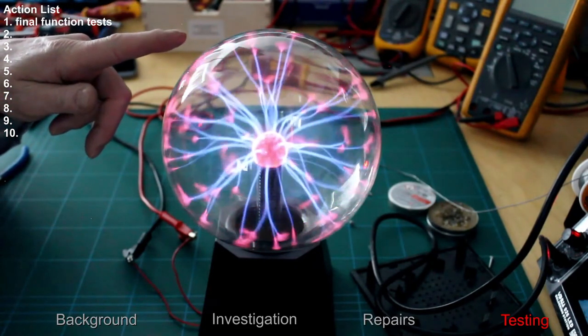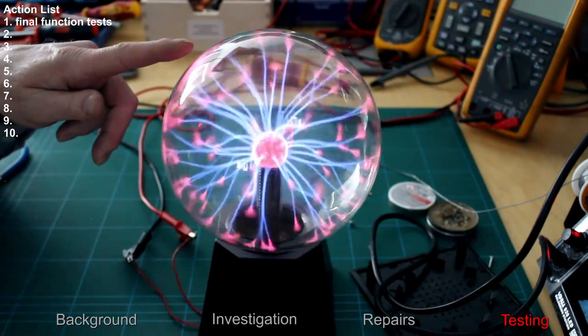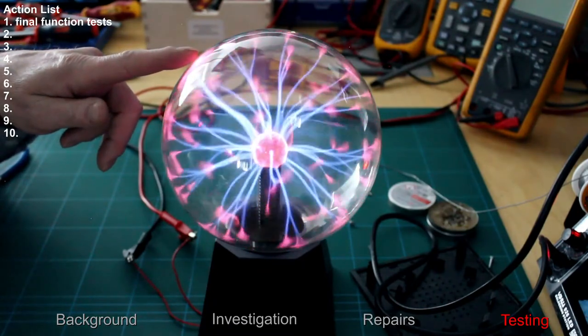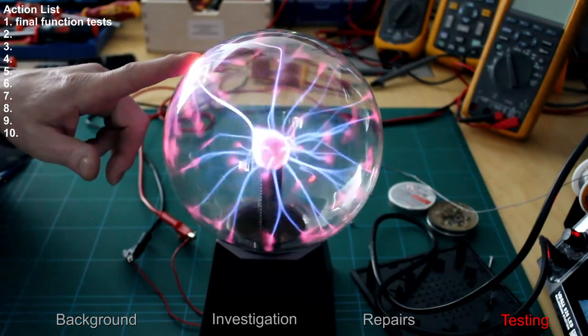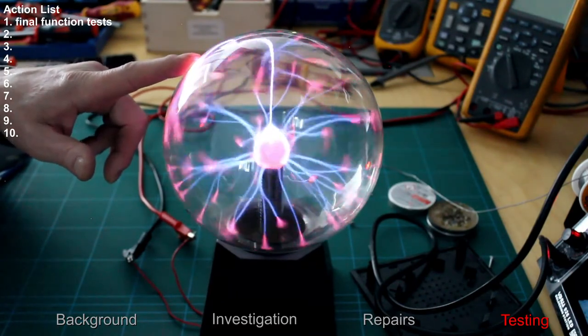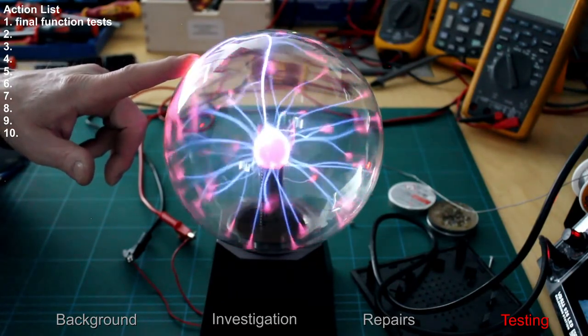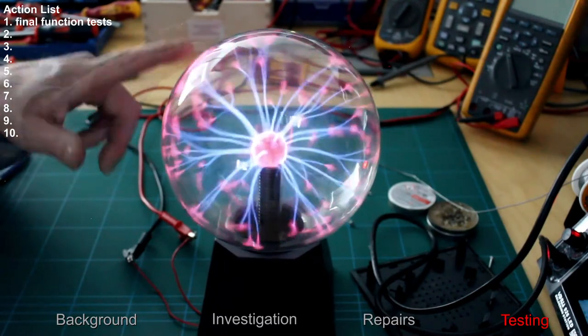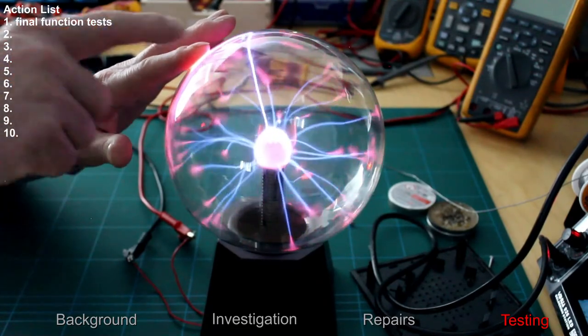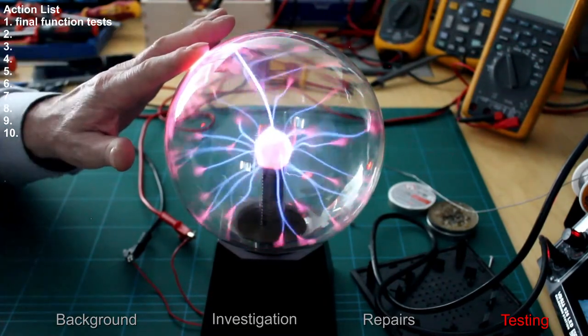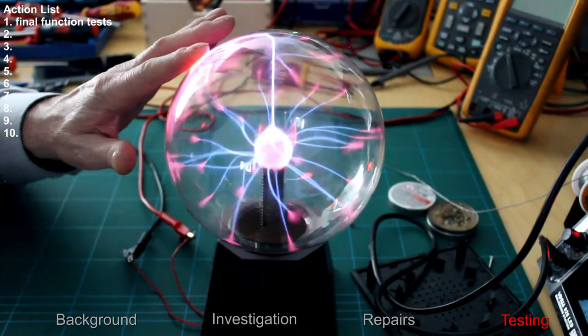So this is why we get these much brighter, much hotter filaments formed. If I leave my finger on there for a while, the actual discharge going through me starts to warm the tube very quickly.